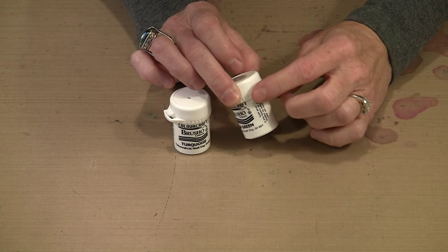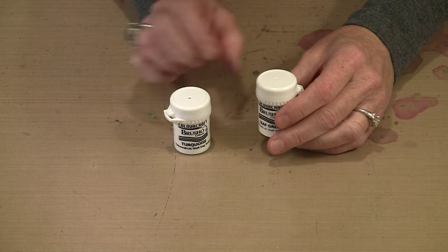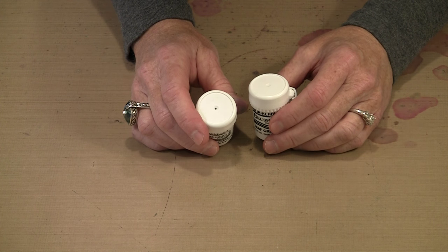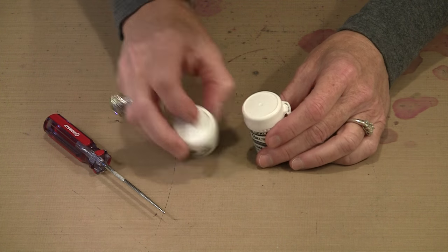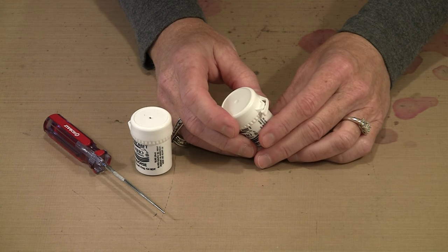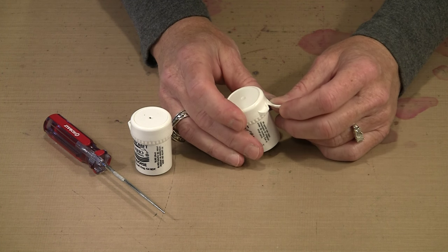You can see there is this pull tab here. If you need to access the pigment in the whole jar, that's going to be the way to get to it. Initially if you want, you can simply poke a hole in the top. But you'll find there are going to be some ways that I want to use Brusho, and to do that I need to be able to open the top.